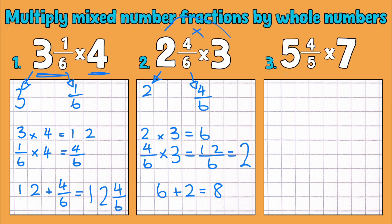Our third example. So we're going to do the same thing. So we've got our five. And then we've got four fifths. So five multiplied by seven is 35. There we go. So that's our whole number done. And now we're going to multiply our fraction by seven.